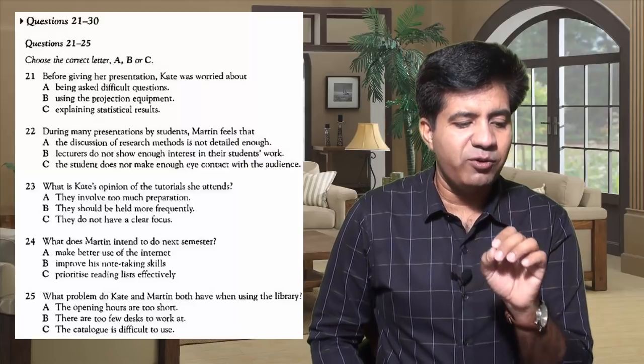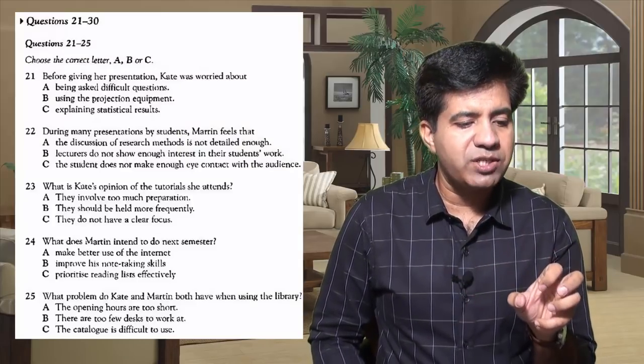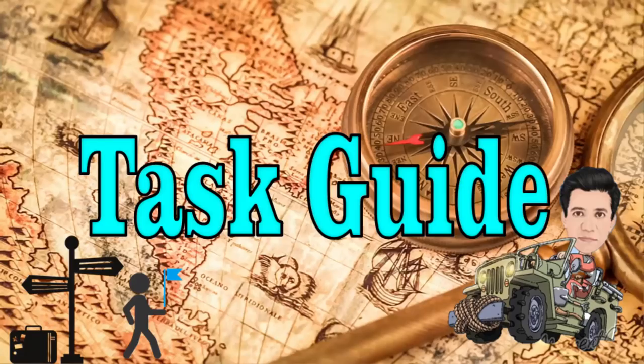Those who want six bands or seven bands can also benefit from these videos. The question type we are going to start today is multiple choice — we call it 'choose the correct letter A, B, C.' It's basically multiple choice: there's a statement and then there are three options. Sometimes the statement is an incomplete sentence and three options can complete it; sometimes the statement is a question with three answers. You can see questions 21, 22, 23, 24, 25 — all with three options.